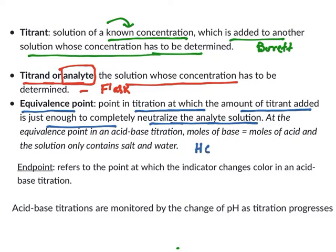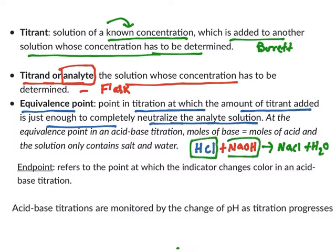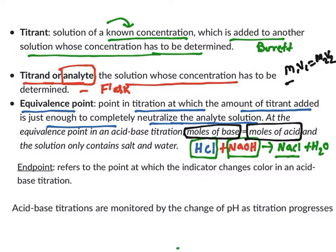Imagine this: the analyte is HCl, and from the burette you start adding NaOH. Neutralization takes place — NaCl and water will form. When the HCl concentration equals the NaOH concentration at that particular point, neutralization takes place and you get salt. At that point, moles of the base will be equivalent to moles of the acid. Once you get this equivalence point, you use the formula M1V1 = M2V2 and find out the concentration of the analyte. This neutralizing point is known as the equivalence point.